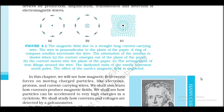Figure 4.1 shows the magnetic field due to a straight long current-carrying wire. The wire is perpendicular to the plane of the paper. A ring of compass needles surrounds the wire. The orientation of the needle is shown when (a) the current emerges out of the plane of the paper, (b) the current moves into the plane of the paper, and (c) the arrangement of iron fillings around the wire. The darkened ends of the needle represent north poles.